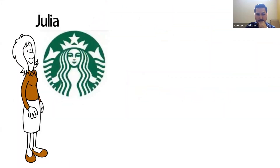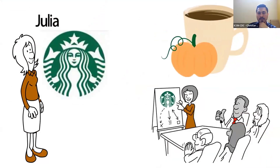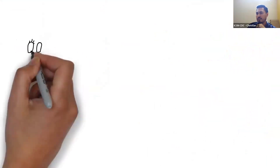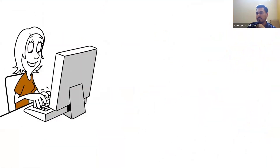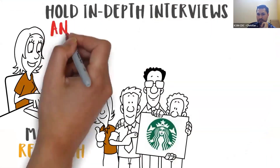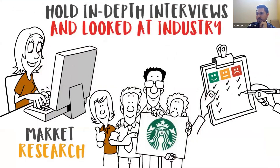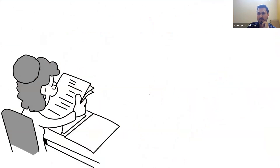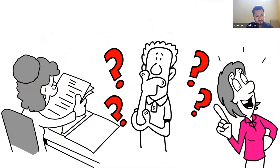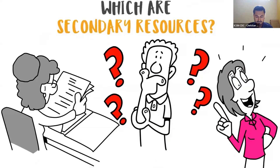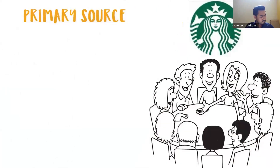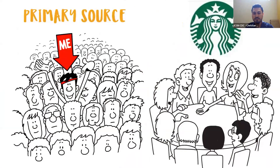Secondary research is the use of data that has already been collected through primary research. For example, Julia works for Starbucks and is trying to convince her company that selling pumpkin spice lattes all year round will increase revenue significantly. To back up her claim, Julia turned to market research — seeking out Starbucks enthusiasts for in-depth interviews and looking at industry sales and financial reports. But which of these are primary and which are secondary? By personally interviewing Starbucks enthusiasts, that would be a primary source because you were the first person to experience that discussion.